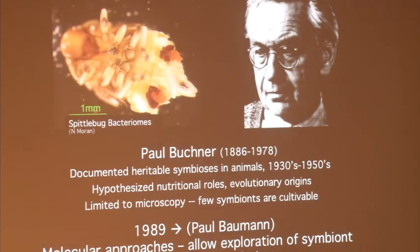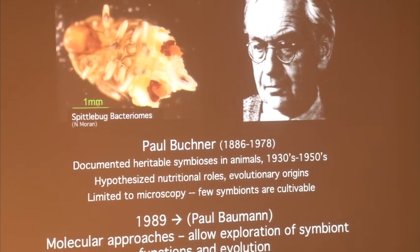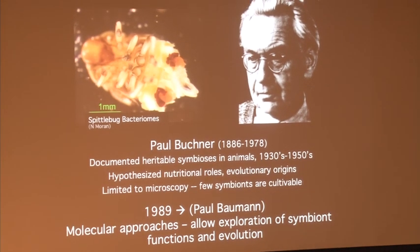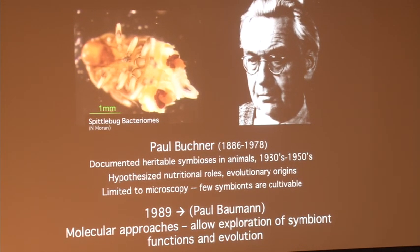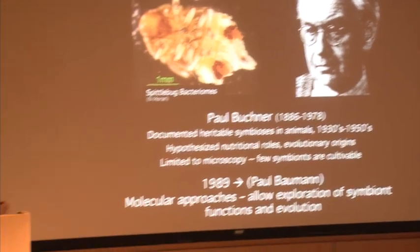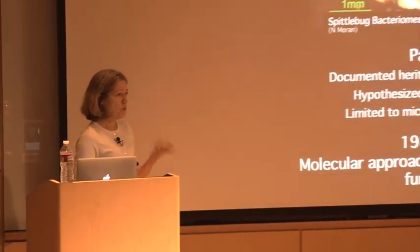A little bit of history: Paul Buchner did a lot of early work summarized in a book translated to English in 1965 — sort of the bible of the field. He documented heritable symbioses and hypothesized that many were involved in nutrition for the insect host, tending to occur in insects on limited diets. He was very limited in terms of his ability — he didn't have any molecular data. Also in the room today are Paul Bauman and Linda Bauman, who really started the study of these symbionts using molecular data.